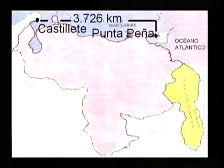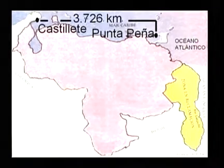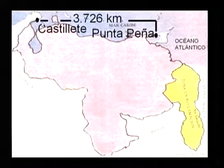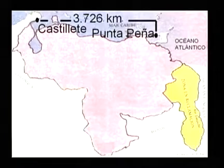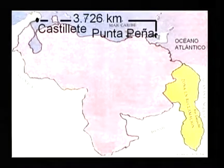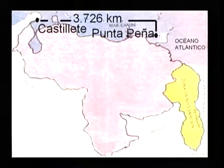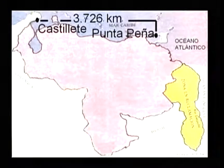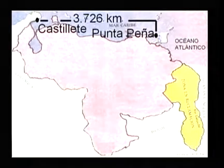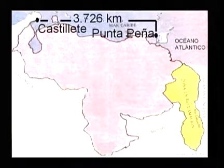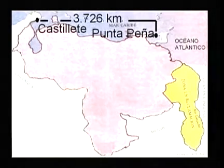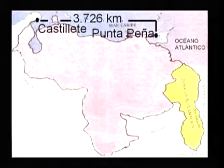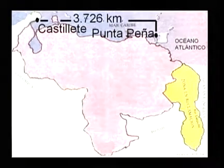En la primera imagen vamos a establecer los puntos de referencia de nuestras costas caribeñas. Comenzamos por el oeste, en la península de Castillete, bañada por el mar Caribe, hasta el recorrido que se hace en Punta de Peña. Desde Castillete hasta Punta de Peña vamos a tener un perímetro de 3.726 kilómetros. Anota Castillete hacia el oeste, Punta Peña hacia el este, y el perímetro de costa caribeña de 3.726 kilómetros.